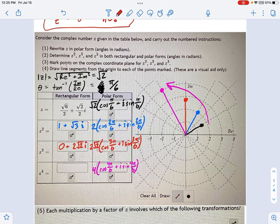Okay, and so on. The rectangular forms, once you have the polar forms, it's pretty easy to get the rectangular forms. You just evaluate it.